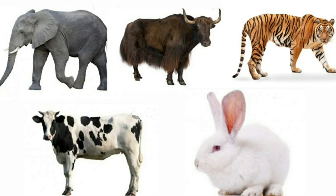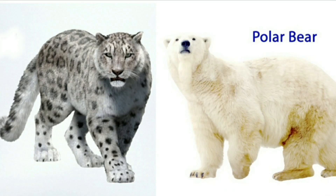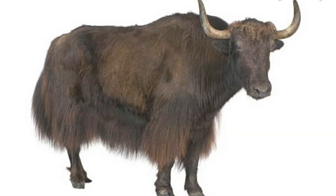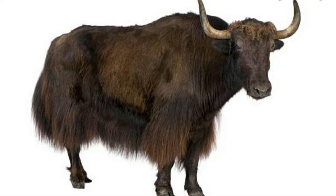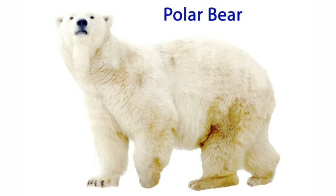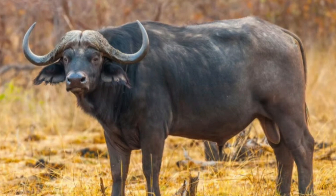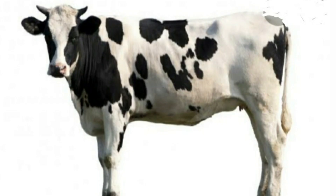The first group of animals have body hair. The second group of animals have scales or feathers on their body instead of body hair. Children, how does the hair of animals help them? In the case of yaks, their thick body hair protects them from the cold. Animals such as yaks, musk oxen and bears live in very cold regions. They have long hair on their body which keeps them warm. Animals such as cows and buffaloes live in warm regions and have short hair on their body.